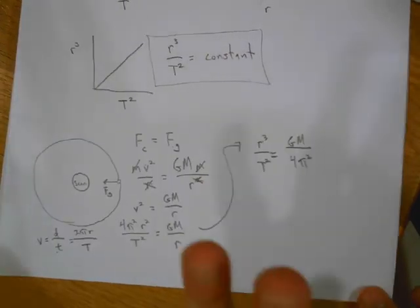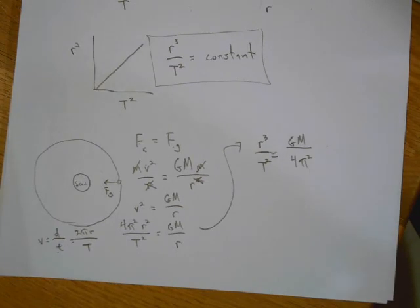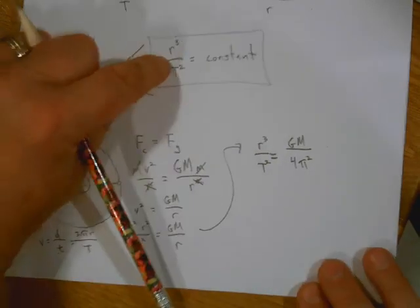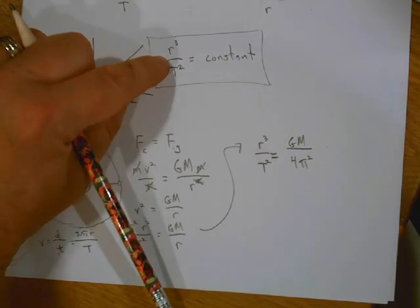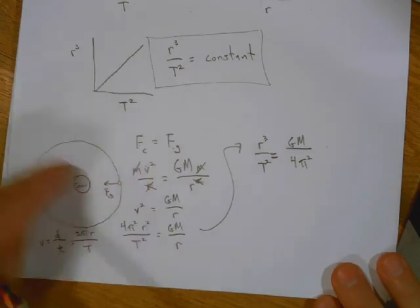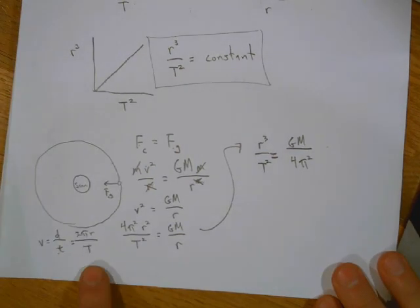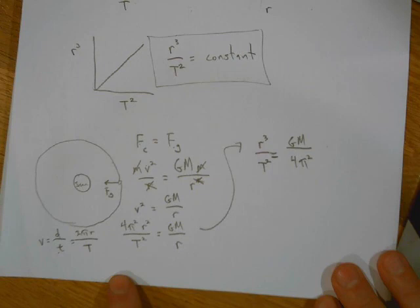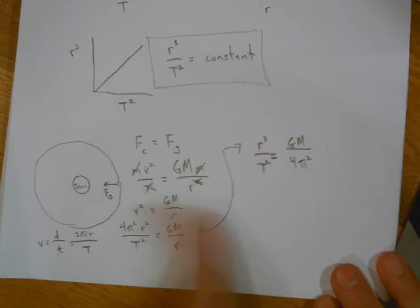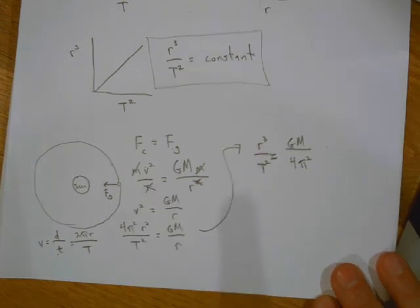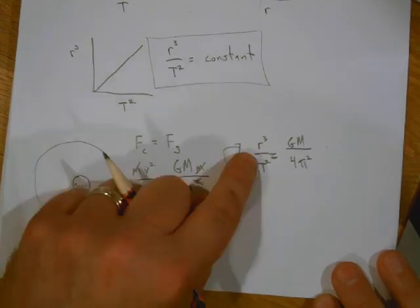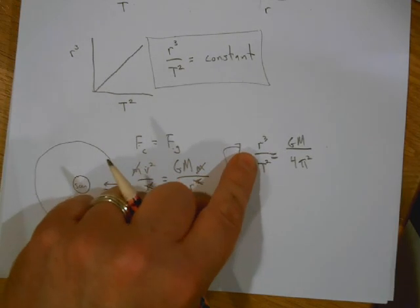So the reason that this relationship is a constant is that. All right, let me pause and say something. I do not want you to memorize this. If you look on your formula sheet it's not there. I want you to be able to solve it. This what I did here is not hard. I just said Fc equals Fg and I did some algebra. I expect you to do that.